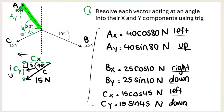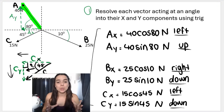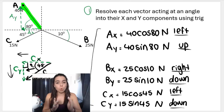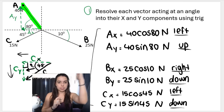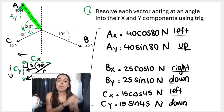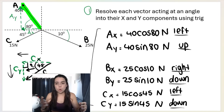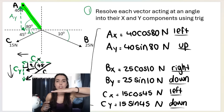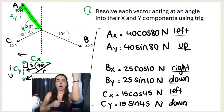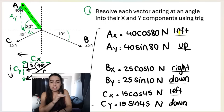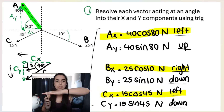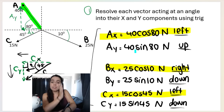This is always step one. It helps to write the directions next to each component. I'm not going to work out what 40 cos 80 equals right now — if you do, remember not to round off. Your first step is always to break up all vectors acting at an angle relative to the x-axis or y-axis into their components using trig. The reason is that we know how to work with vectors along the horizontal — left or right — and vectors along the vertical — up or down.